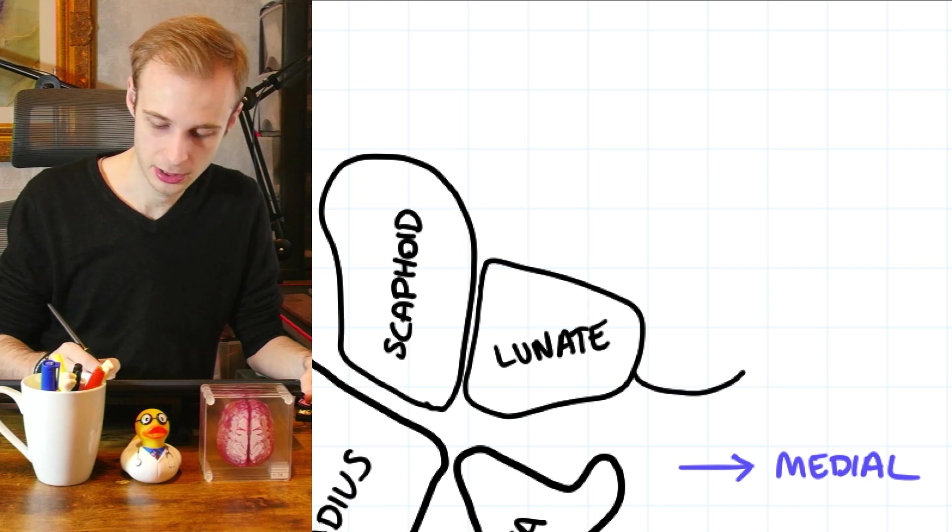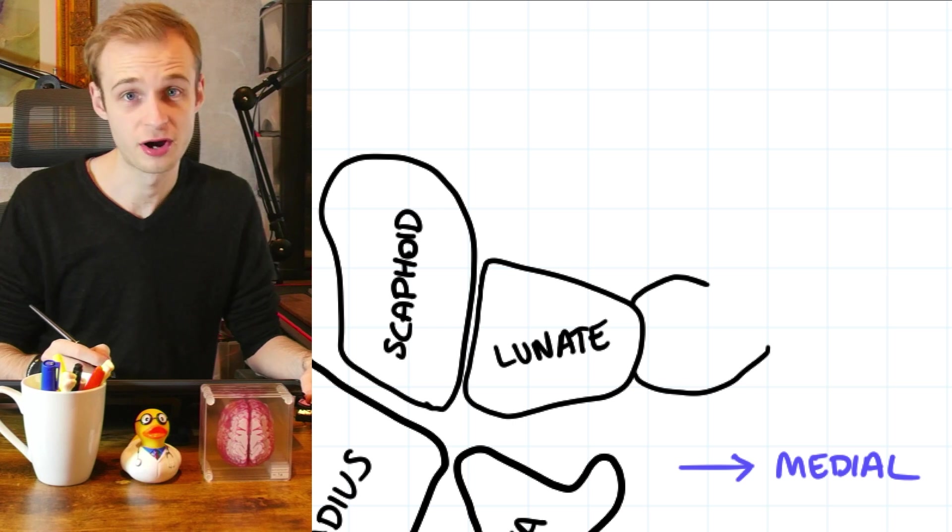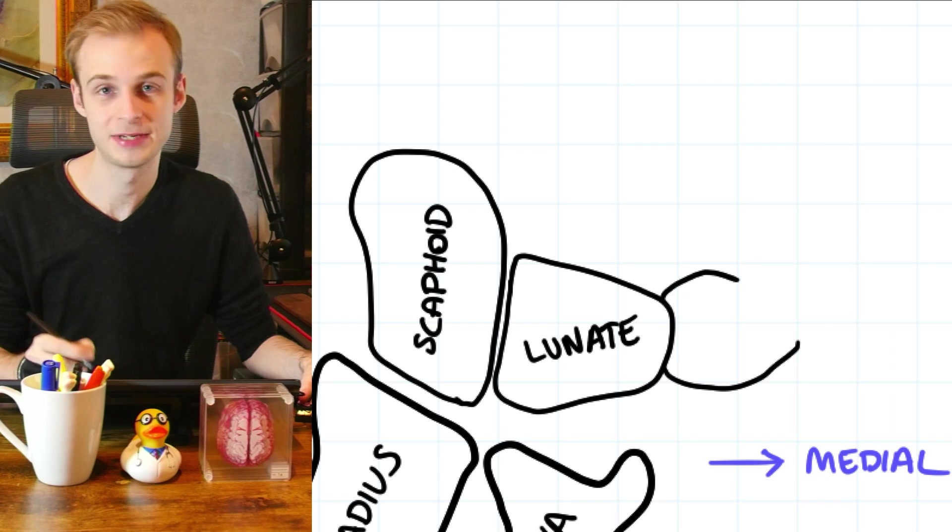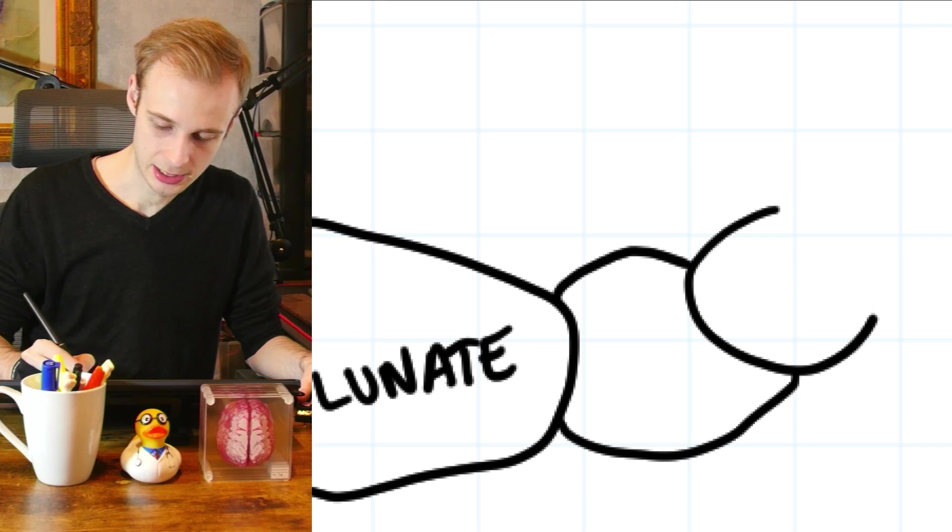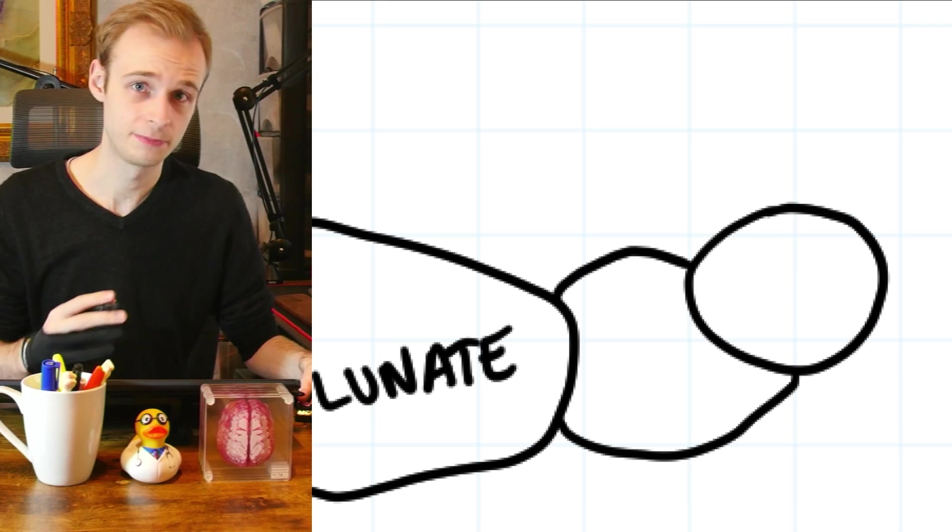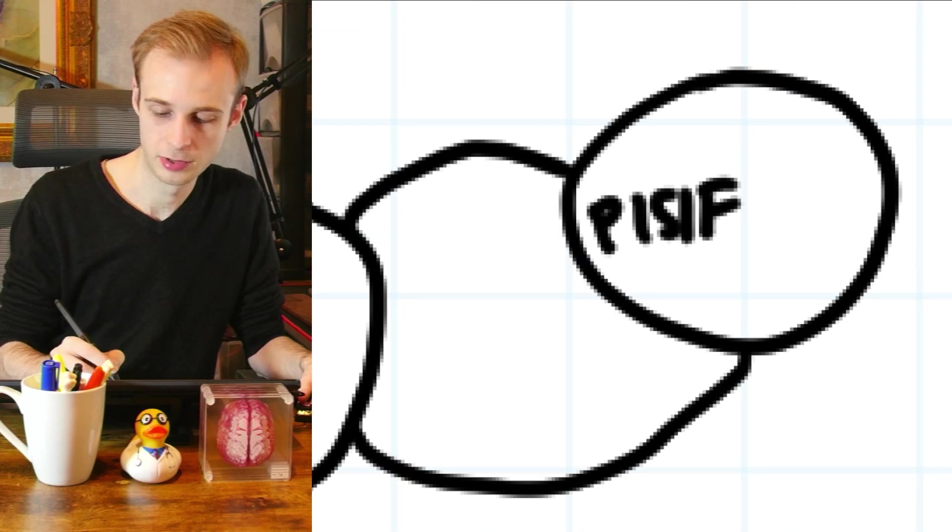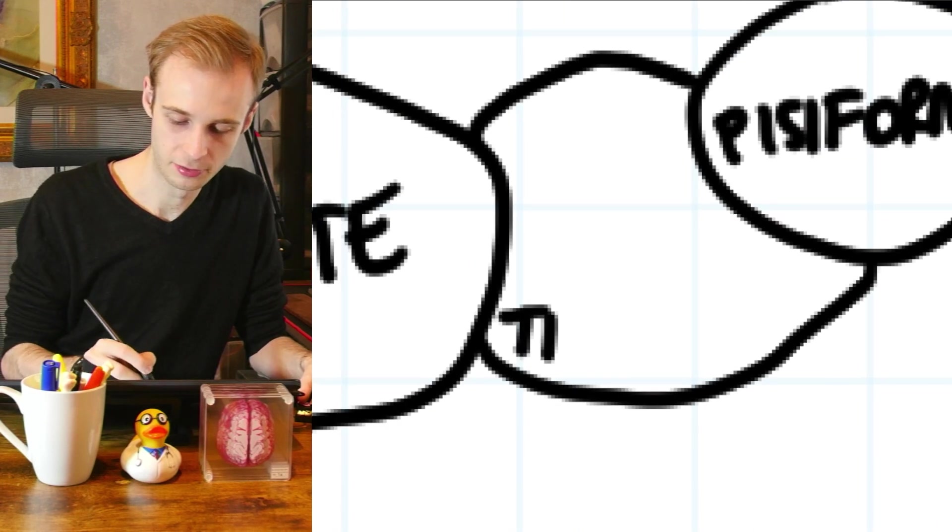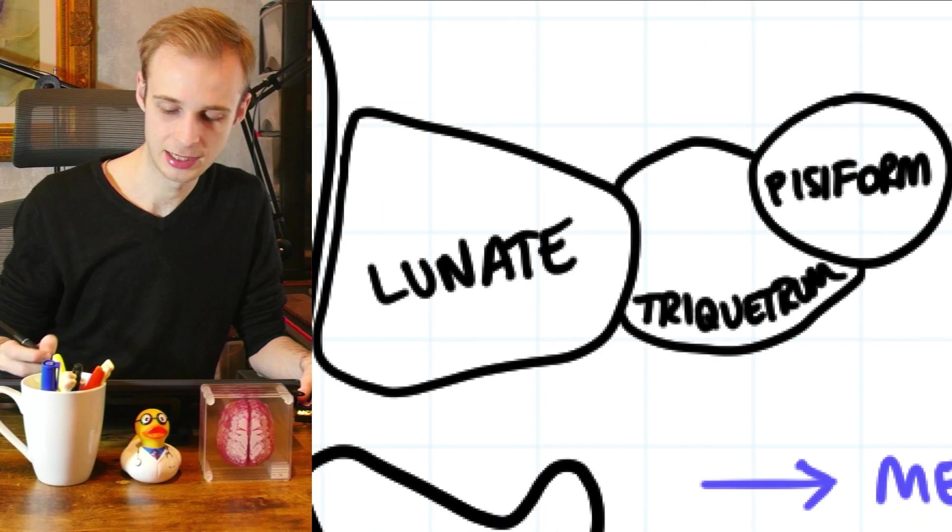Now sitting next to the lunate bone here, the second to last of our home row or proximal row is a bone called triquetrum which in Latin means three-cornered but the reason why I've left it incomplete here is that over the top of triquetrum sits the last bone called pisiform which means P shaped. There's pisiform kind of fit triquetrum in here.